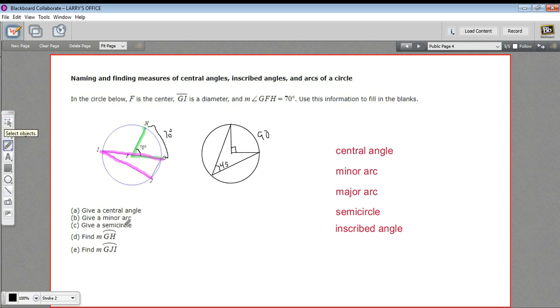All right. So let's see if we can answer some of these questions here. A says give a central angle. And that's what I outlined in green here. That's just what we've been talking about. It's an angle that's formed with the vertex at the center of the circle. So this would be HFG, angle HFG.